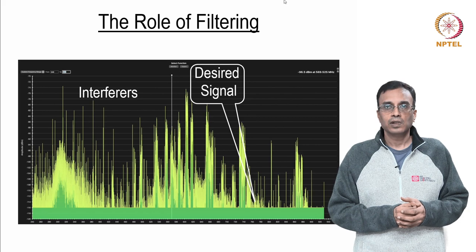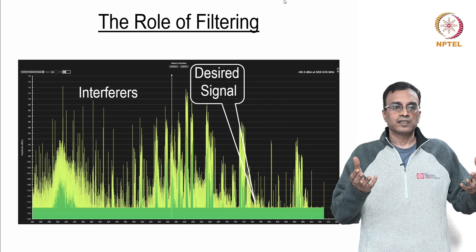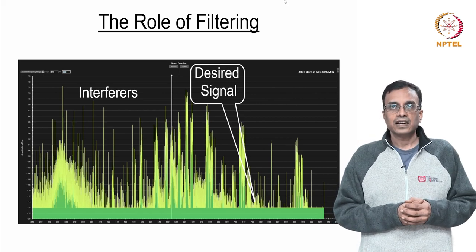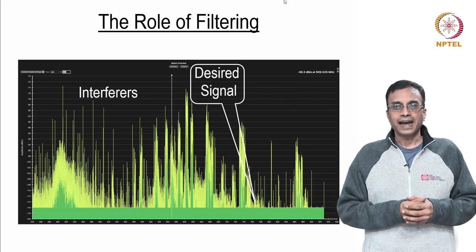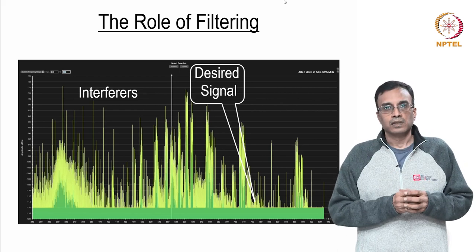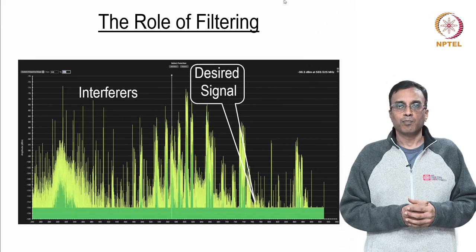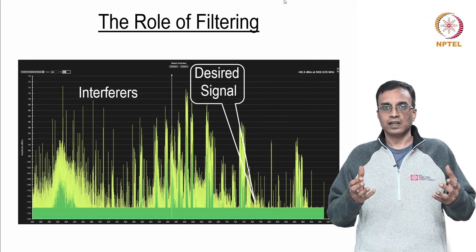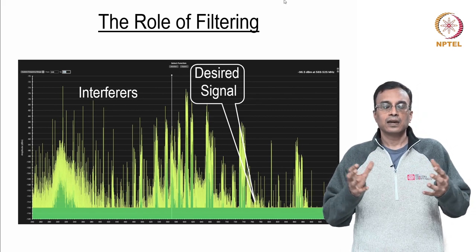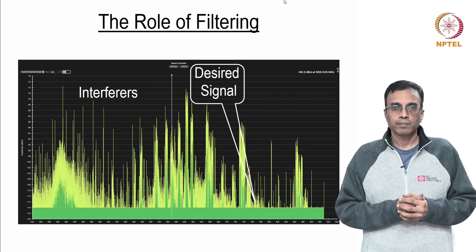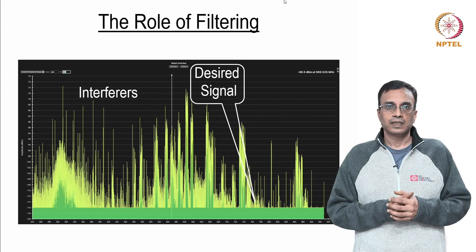To show you an example of the role filters play in signal chains, here is a typical example of an RF signal chain. The desired signal is extremely small as shown in this picture, but that by itself is not a problem. The signal is unfortunately also accompanied by a whole lot of interferers, which are much larger than the desired signal itself. The role of the analog designer is to take this really dirty spectrum and only digitize that part of the spectrum that is relevant.